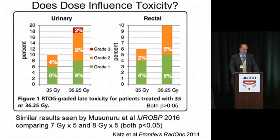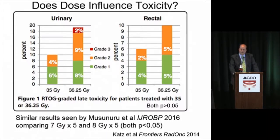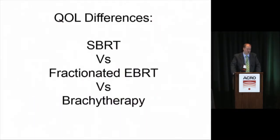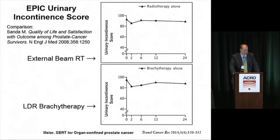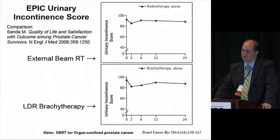Does dose influence toxicity? Data from Dr. Katz with about 600 patients shows at least a trend that urinary toxicity grade 1, 2, and 3 appeared greater with 7.25 gray times 5 compared to 7 gray times 5, and similarly with rectal toxicity. P-values were greater than 0.5, so not statistically significant. However, from Sunnybrook in Toronto, a broader dose range comparing 7 gray times 5 in the first trial and 8 gray times 5 in the second did clearly show an association between both GU and rectal toxicity with higher doses.